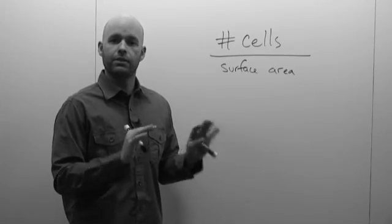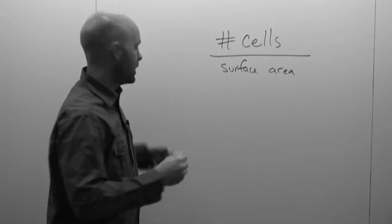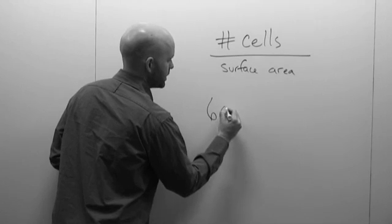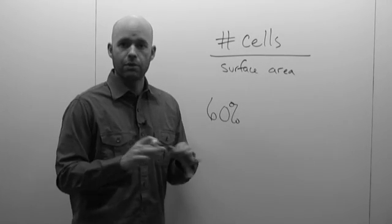So before you even get started splitting cells, the first thing you need to analyze is what is the current density of the cells? What's the current confluence? So for the sake of this example, let's say the current confluence is 60% meaning that 60% of the dish is covered by cells.